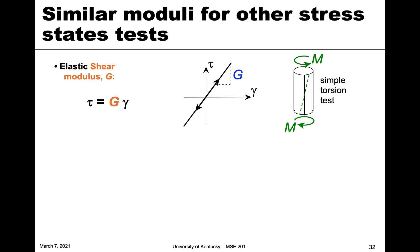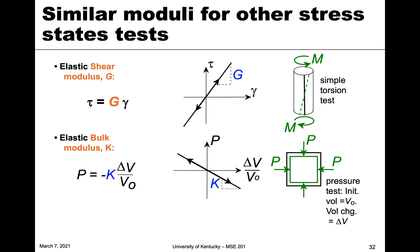We just talked about tension and compression, but there are similar moduli for other stress states. For torsion, where we apply a twisting motion, we look at torsional stress versus strain, and the slope is G — the shear modulus — representing resistance to twisting. There's also a bulk modulus K for hydrostatic compression, where compression acts from all around. Every type of testing has a modulus related to the elastic properties of the bonds.